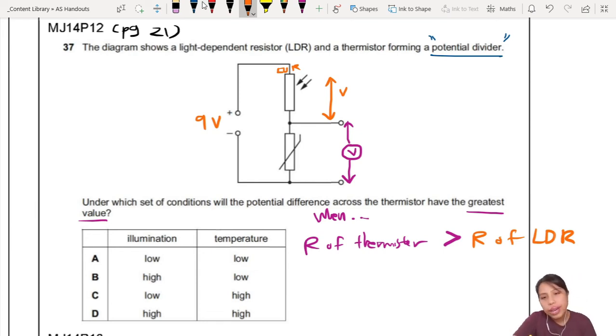So that means you have to think of when is your thermistor resistance very big? Think of it. You have to remember, high R means cold. Very cold. Then the resistance of this one will be very high.